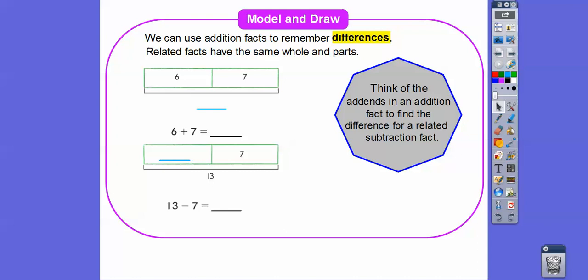So related facts have the same whole and parts. So six plus seven — how about six plus six? Six plus six is twelve, so six plus seven is one more than twelve, which is thirteen. So six plus seven equals thirteen. What we're going to do is relate this addition fact with this subtraction fact. If the whole thing is thirteen, then thirteen minus seven will give us six.